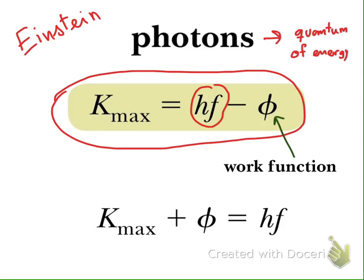When the photon hits the electron, it gives all of its energy to the electron at once. It does not continuously give energy to the electron. Imagine throwing a ball that hits something — it gives all its energy to the object it hits. So the energy transfer happens instantaneously. Furthermore, the energy of the photon depends on the frequency.